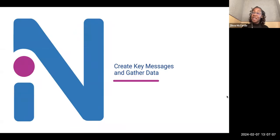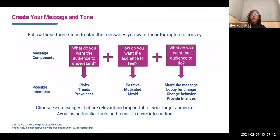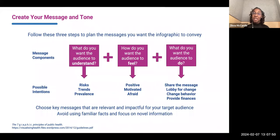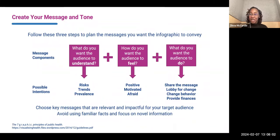The next step is to create key messages and gather data. When creating your message and tone, follow three steps: think about what you want the audience to understand, how you want them to feel, and what it is that you want them to do. For example, you might want your audience to understand the risk of developing diabetes or any other disease, then feel motivated to change their behaviors. You want to choose key messages that are relevant and impactful to your target audience — this is why it's important to do audience personas first — and you want to avoid familiar facts and focus on new information.